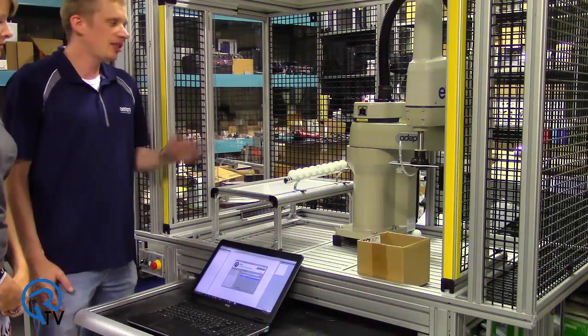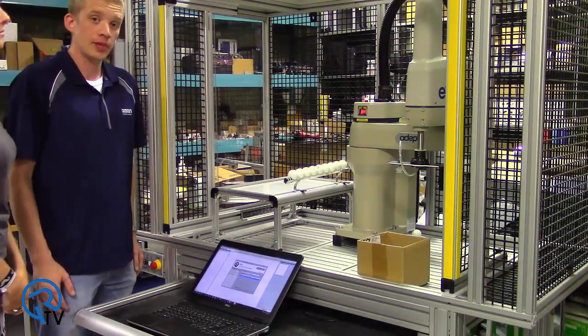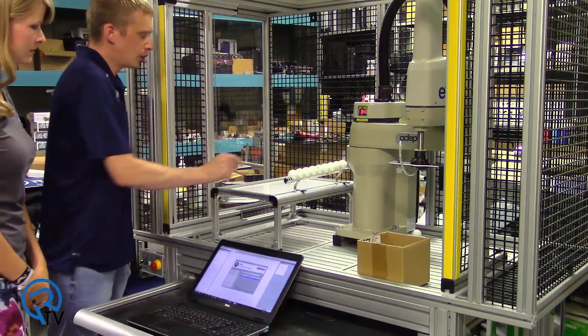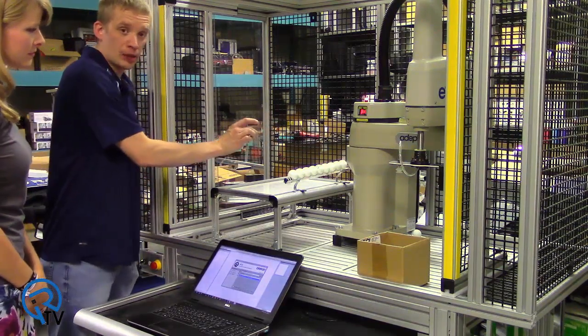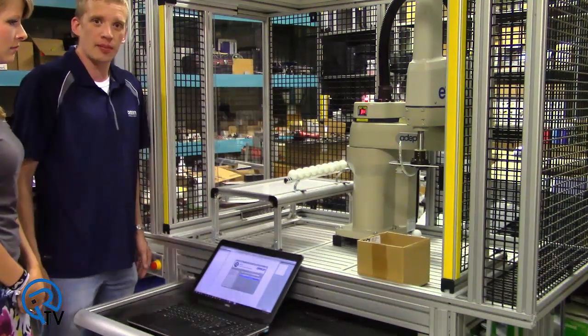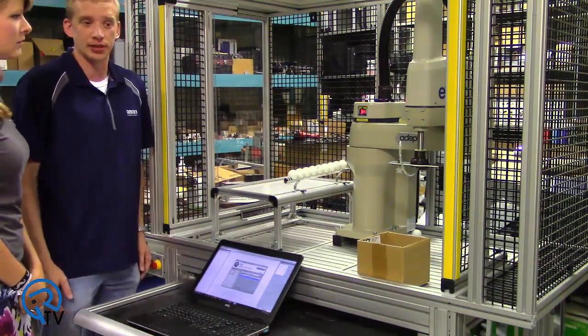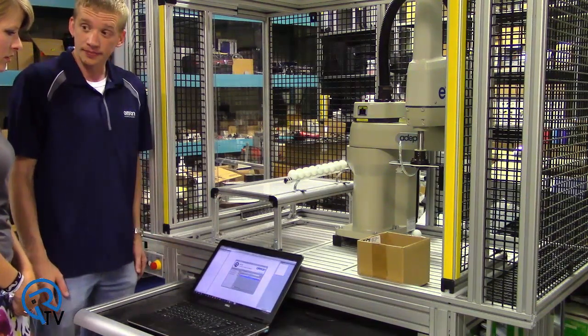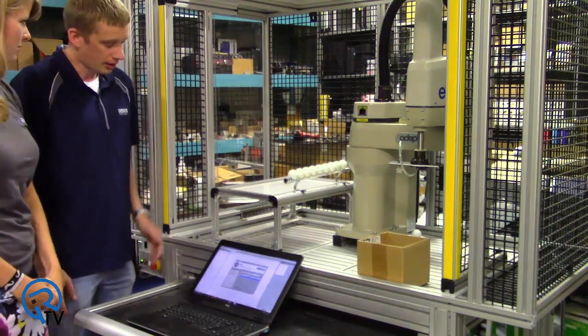All right Lindsay, this is our adept eCobra 600 robot. The application we're going to do is we're going to pick up from this line of ping pong balls and place it into the box. It's a very simple and common pick and place packaging application. Okay, cool. All right, you ready to get started? Yes, I think so.